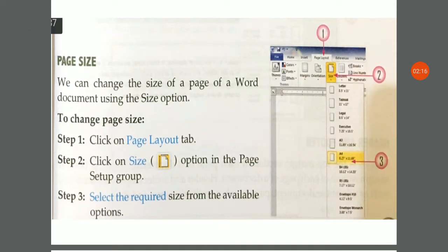Page size. We can change the page size of a Word document using the size option. Just like you use a notebook, register, or diary, and each has a different page size — similarly, in MS Word there are different sizes of pages available, such as A2, A3, and A4.